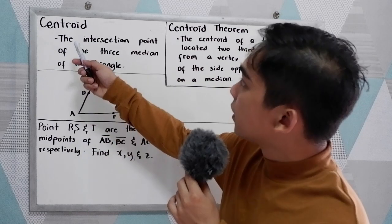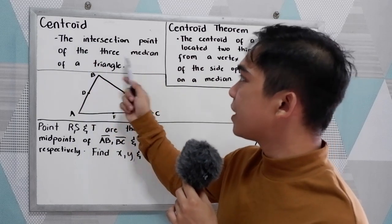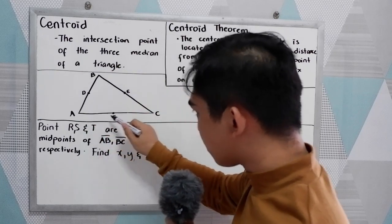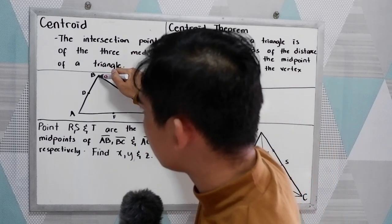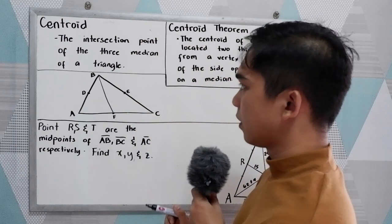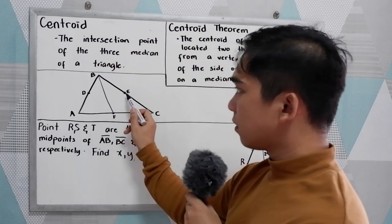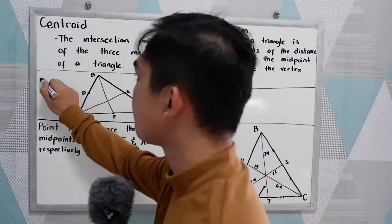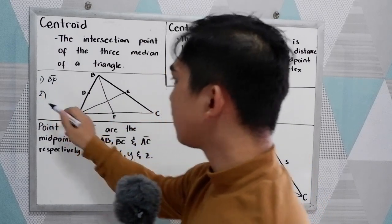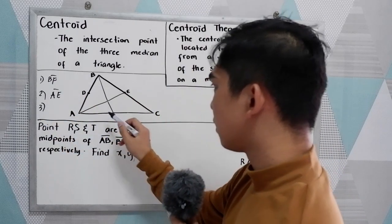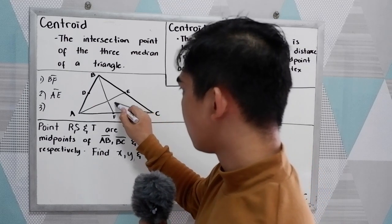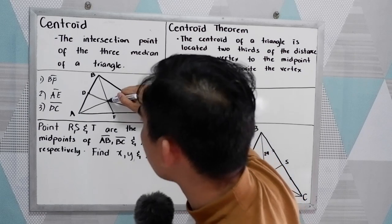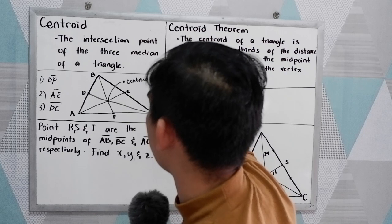So first, what is a centroid? A centroid is the intersection point of the three medians of a triangle. Let's say we have triangle ABC. We draw the first median BF from vertex B to the midpoint of AC, the second median AE connecting vertex A to midpoint E, and the third median CD connecting vertex C to midpoint D. The intersection point of the three medians is what we call the centroid.